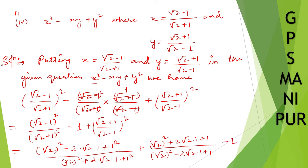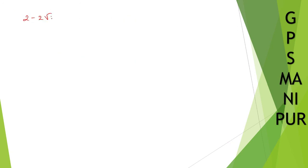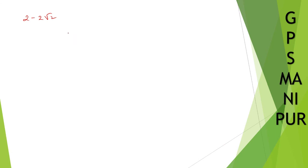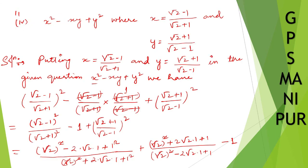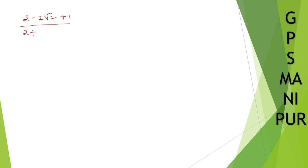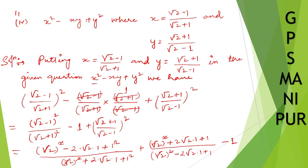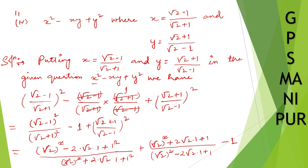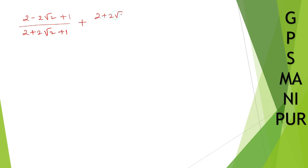The square and root cancel throughout. So we get: (2 minus 2√2 plus 1) divided by (2 plus 2√2 plus 1), plus (2 plus 2√2 plus 1) divided by (2 minus 2√2 plus 1), minus 1.